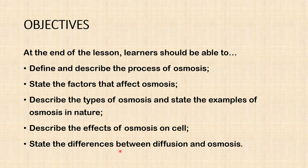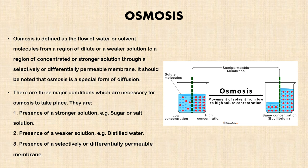State the differences between diffusion and osmosis. Now, what is osmosis? As said in the previous video, osmosis is a type of passive transport. Osmosis is defined as the flow of water or solvent molecules from a region of dilute or weaker solution to a region of concentrated or stronger solution through a selectively or differentially permeable membrane. It should be noted that osmosis is a special form of diffusion.